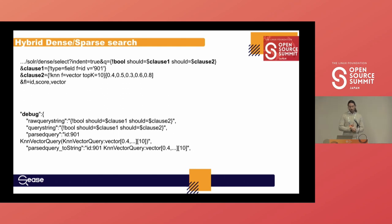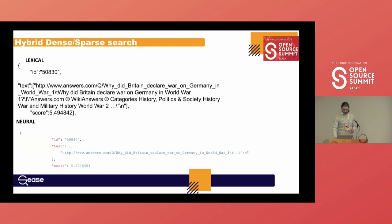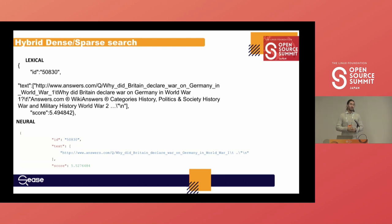An important capability is combining dense vector search with lexical retrieval. You may want to find top K nearest neighbors among documents containing certain query terms, or pre-filter your corpus with lexical search first and then run top K on the reduced results. The response documents receive a combined score — the vector distance plus the standard BM25 score calculated by Apache Solr, which is based on term frequencies of query terms and document frequencies across the corpus.